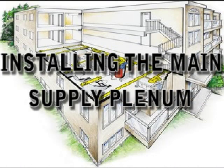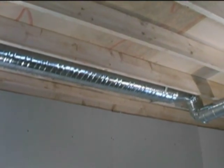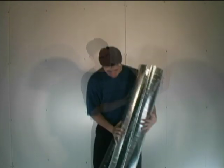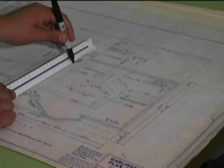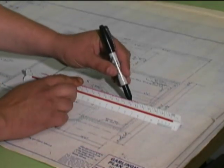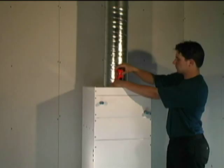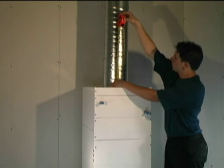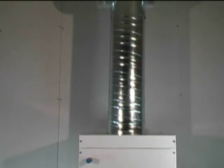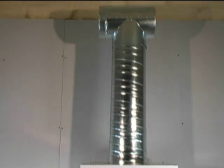Installing the main supply plenum. Two types of duct are recommended for use with the High Velocity System: spiral duct or snap lock duct. The main plenum should be located according to the design layout. Before beginning work, inspect the location of the duct to ensure there are no obstacles. It is essential that the main supply plenum extend a minimum of 18 inches from the fan coil before any elbows or T's are installed.